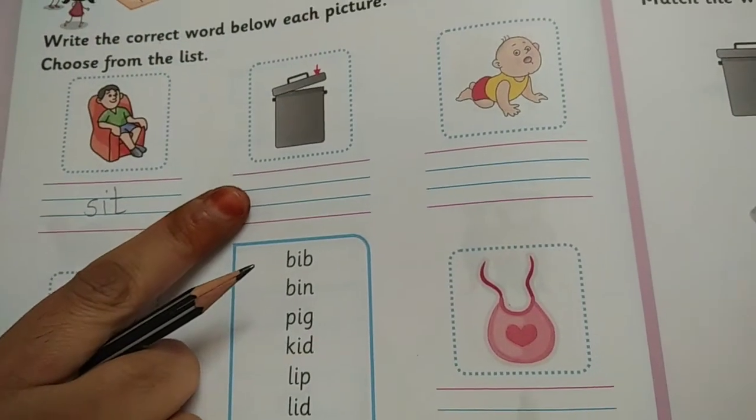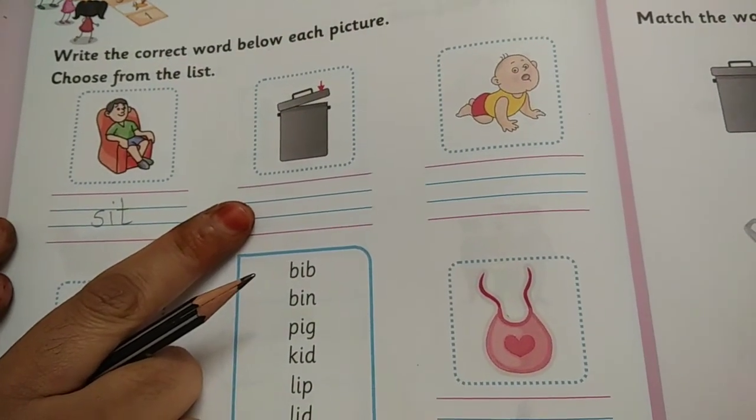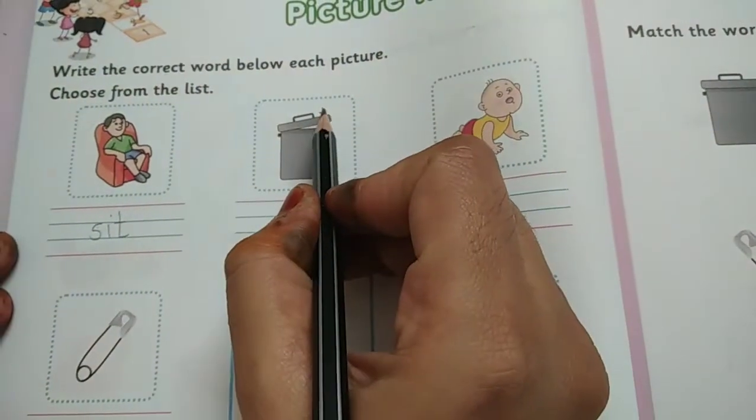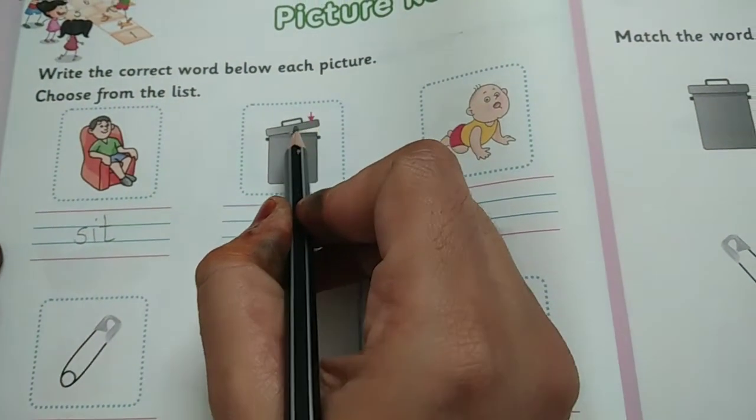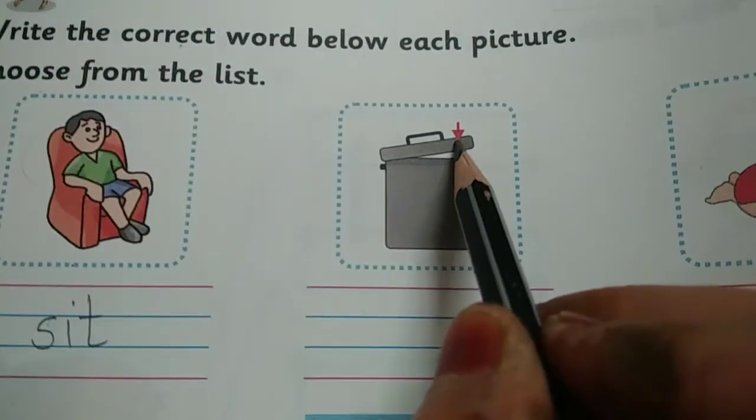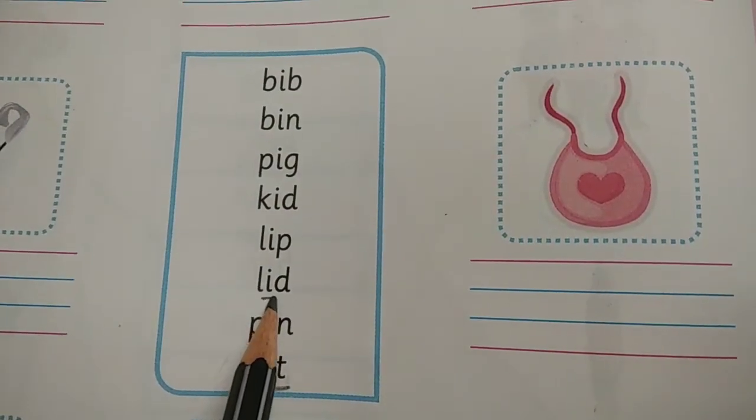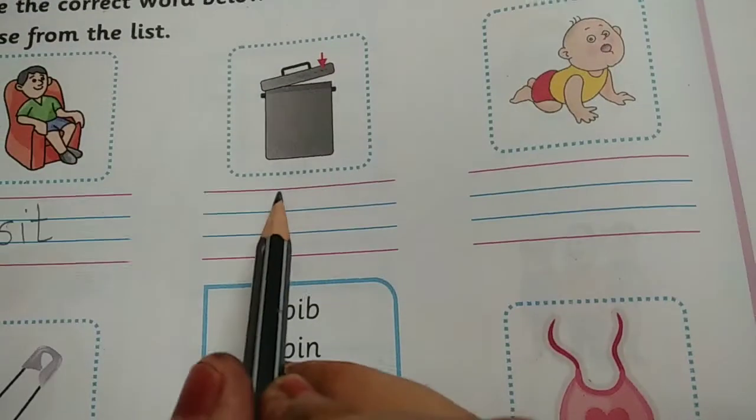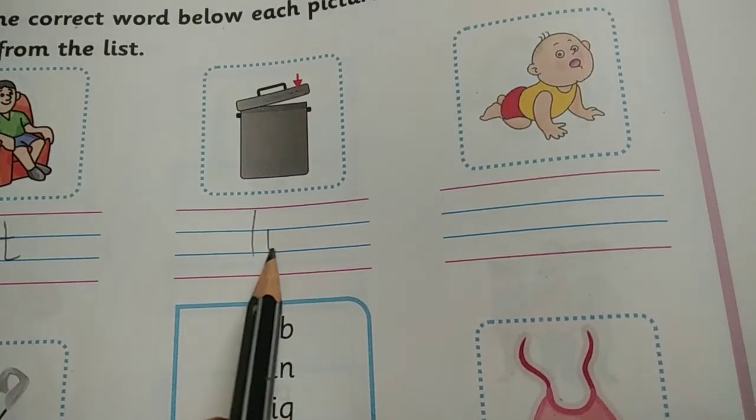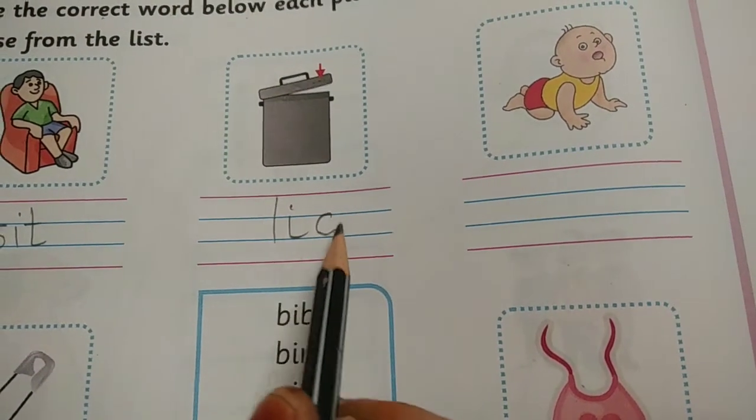Then what is this? It is a lid. L-I-D. Because I had told you that where there is an arrow, that means it's the upper part or tail. So this is lid. Again you will see over here. Yes. Here is lid. You can underline it here. Then write L-I-D. Lid.